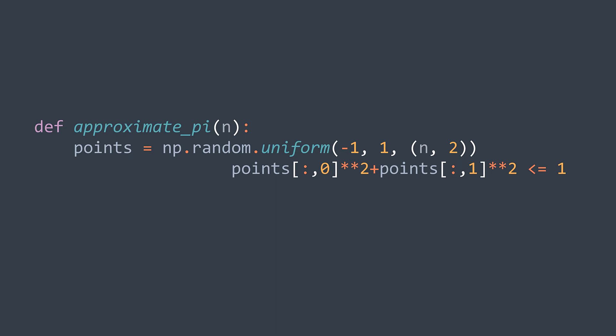We write this for our array of points, we get a boolean array with true for points that satisfy the condition, and false for others. To count the number of true values, we just use sum. It will treat true values as 1, and false values as 0.